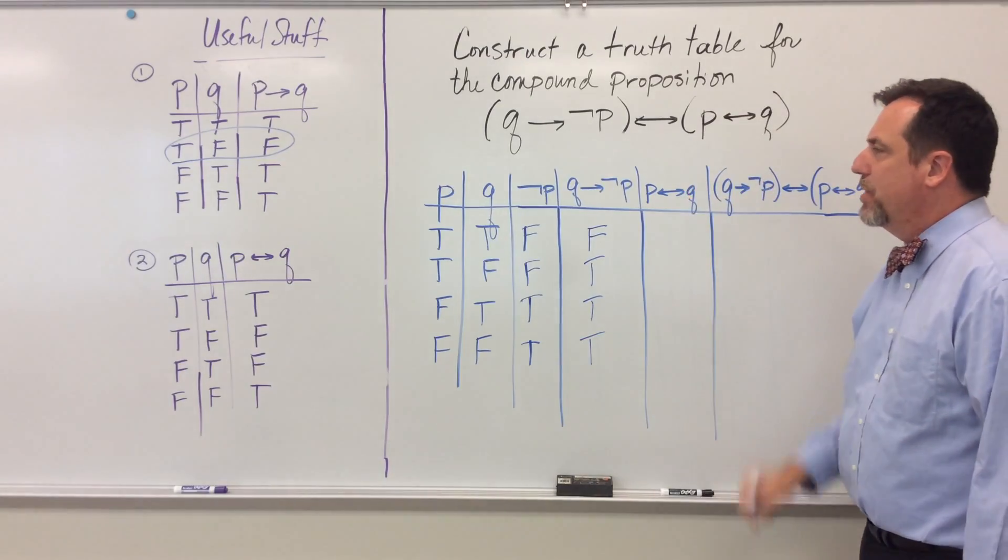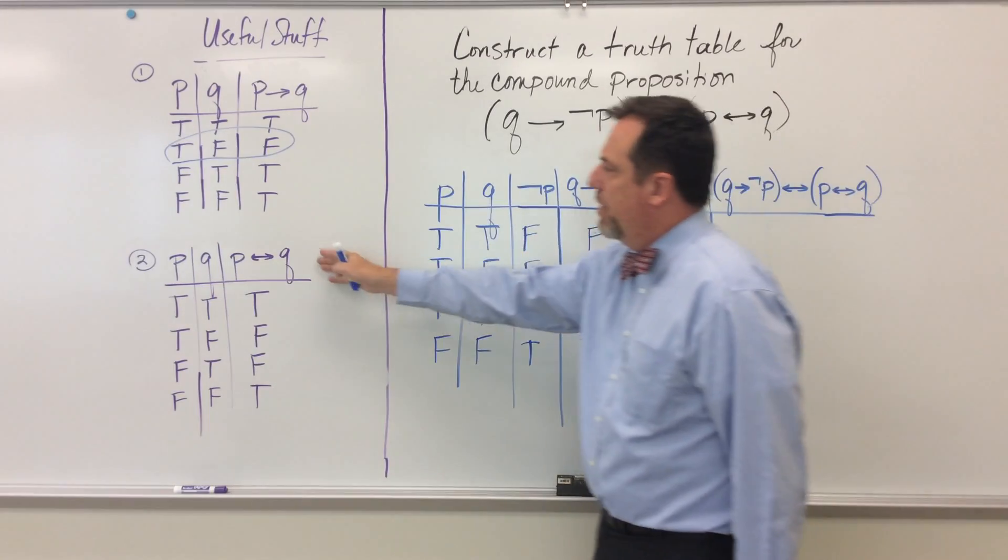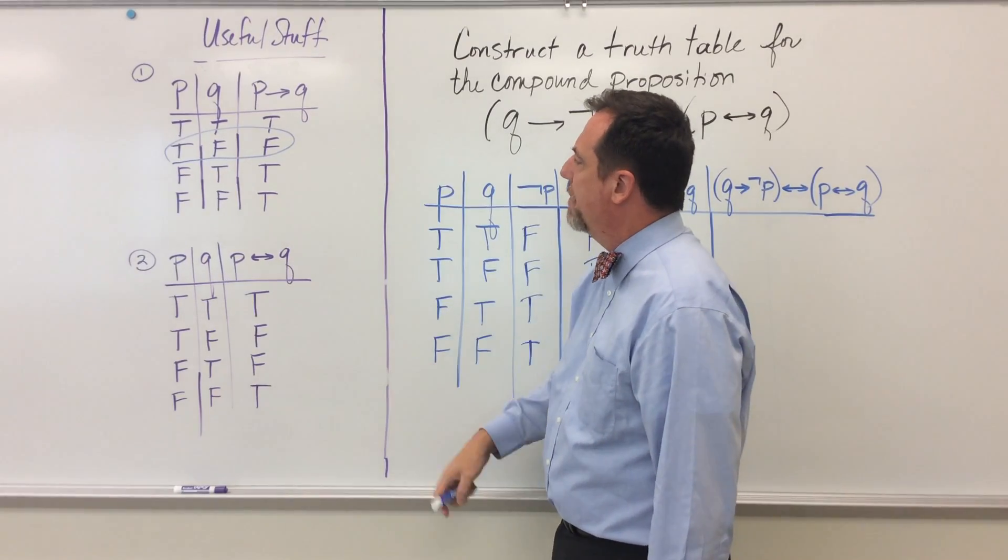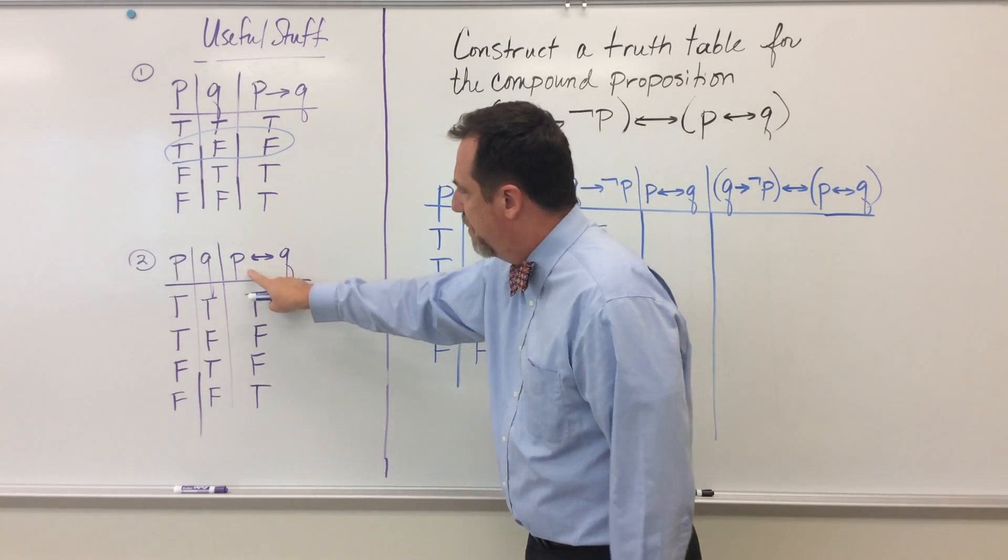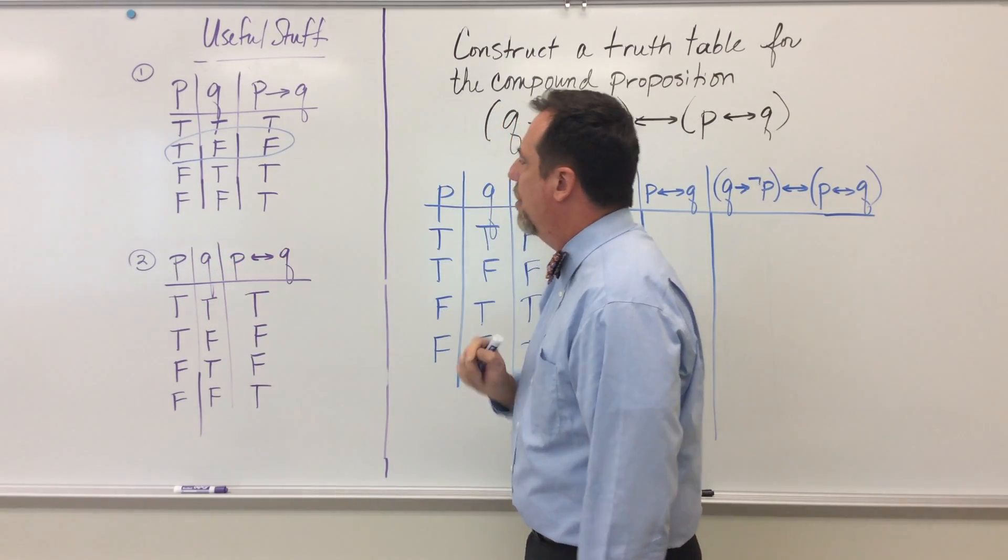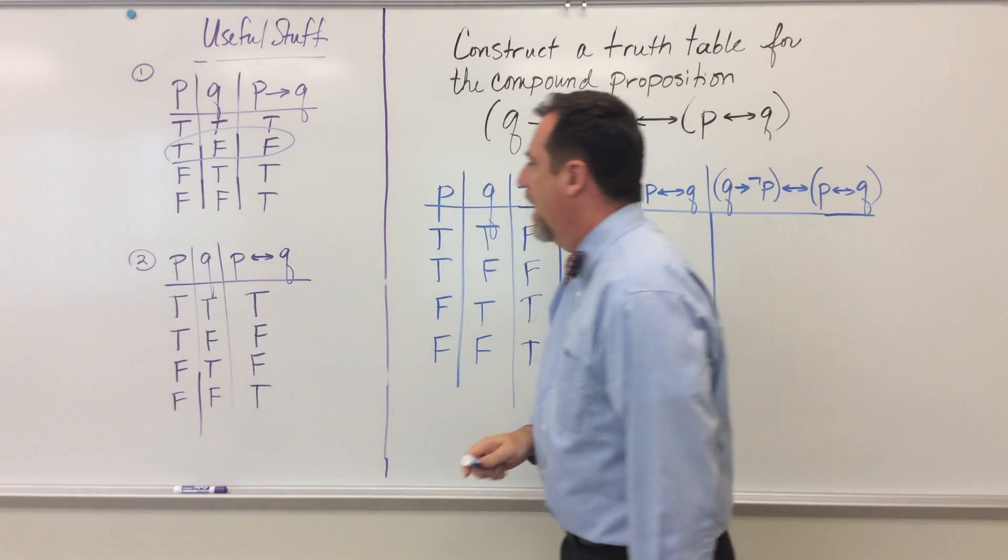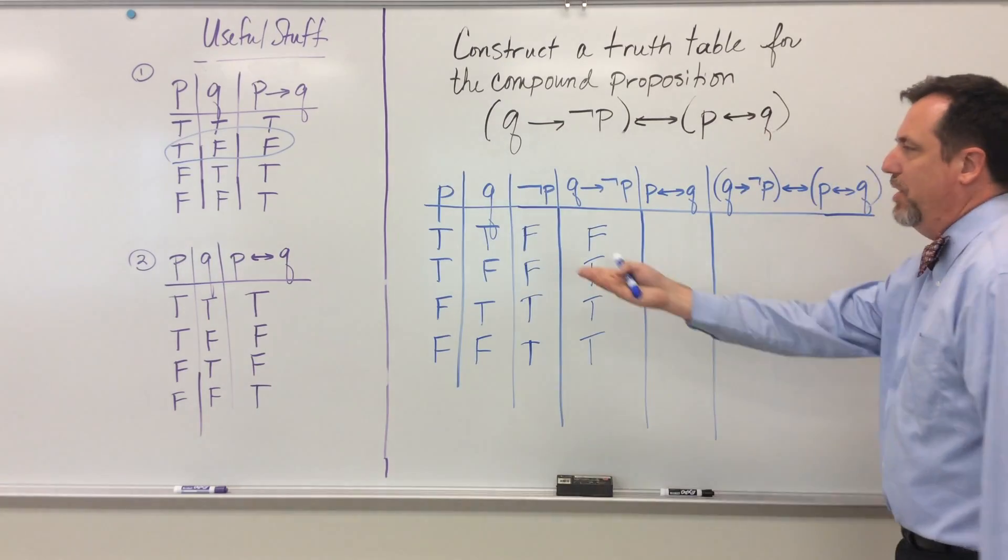Now, here's a biconditional, and it's our first one we've talked about so far. I'm going to use this useful stuff. It's sort of my cheat sheet for this problem. Again, I would have this memorized. Notice that P, if and only if Q, is true exactly when P and Q have the same truth value. Okay, so that's what that cheat sheet tells you.